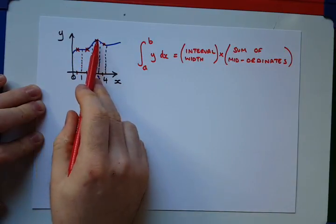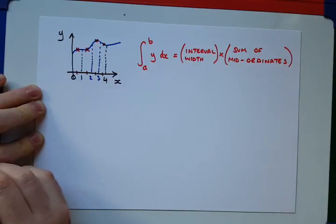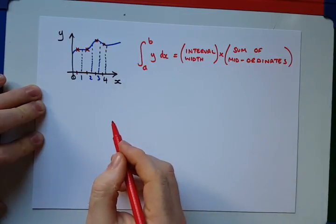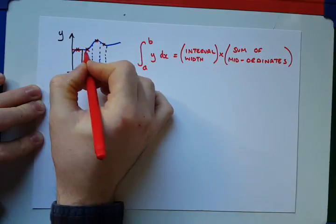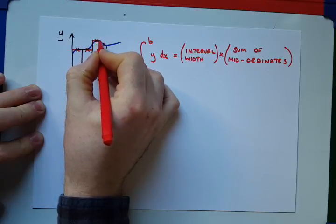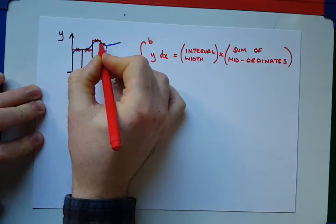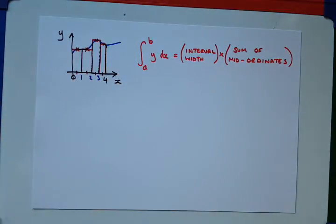So, once we find these four values of y in our case, we add them up and multiply them by the interval width. Effectively, what the mid-ordinate rule is, is we're setting up four rectangles here, each of equal width, differing heights, we find the areas of those four rectangles and add them together in our case.